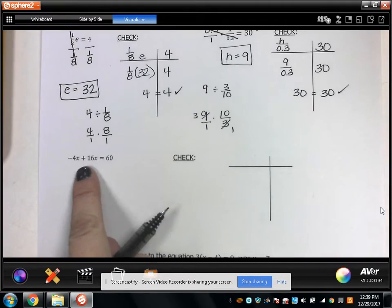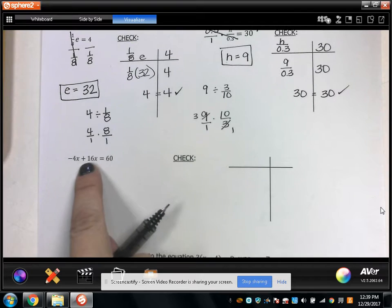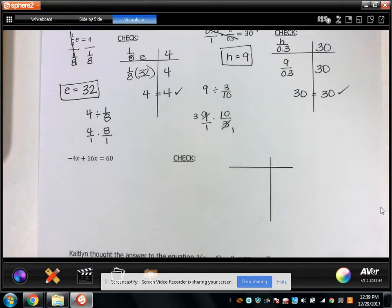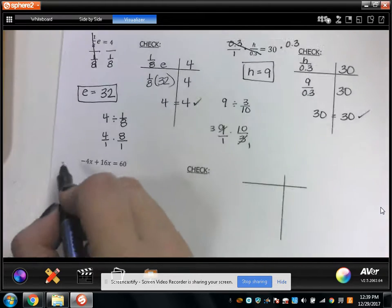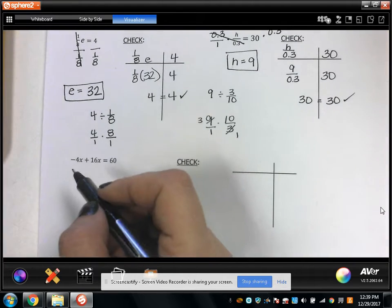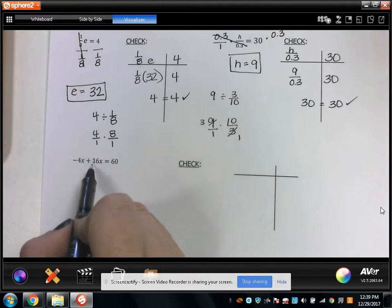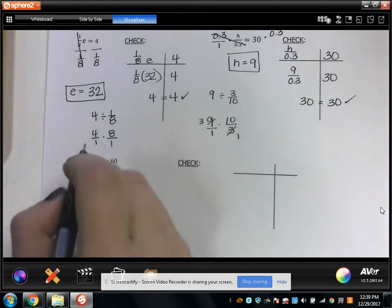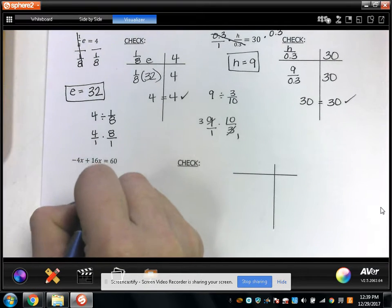Now here, this looks like a longer equation because there's two things on this side of the equal sign and only one thing on this side of the equal sign. But if you notice, these are like terms, so I can combine them. Negative 4x plus 16x is positive 12x. So I have 12x equals 60.